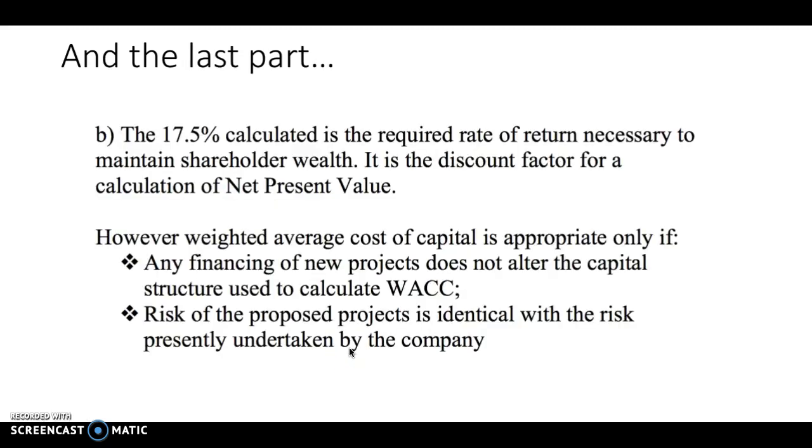Now the last part was that the 17.5% calculated is the required rate of return necessary to maintain shareholder wealth, and that's the discount factor that we've been using for calculation of net present value. However, any weighted average cost of capital is appropriate only if any financing of new projects doesn't alter the capital structure that we've just used to calculate that, and the risk of proposed projects is identical with the risk presently undertaken by the company. Now these two particular issues are big ones when working things out in real life, because always it's going to be something that changes that. So that makes this weighted cost of capital a dynamic calculation for the vast majorities of companies.